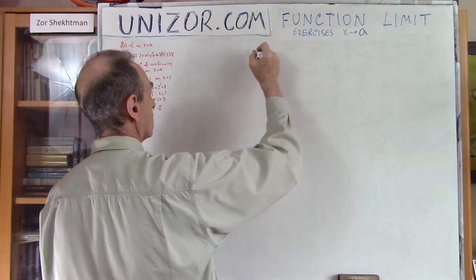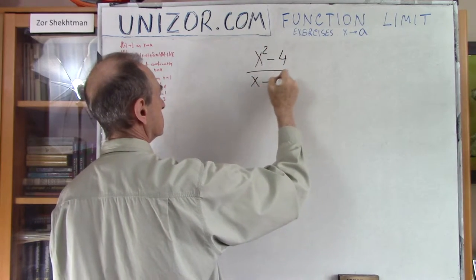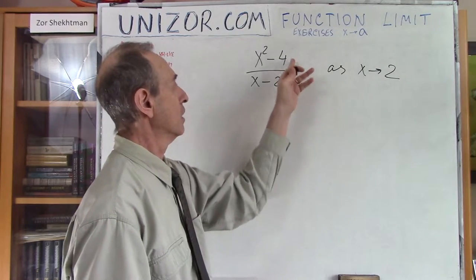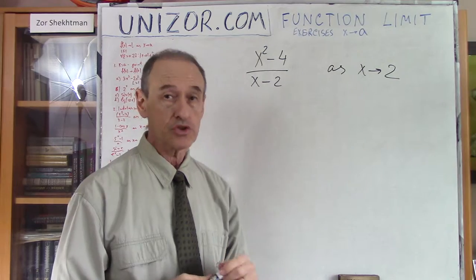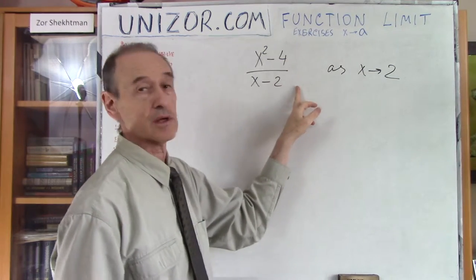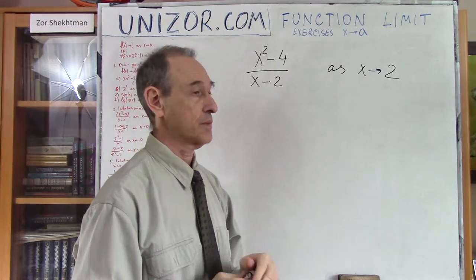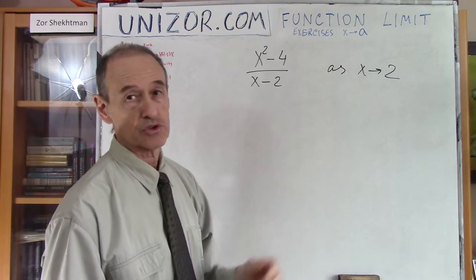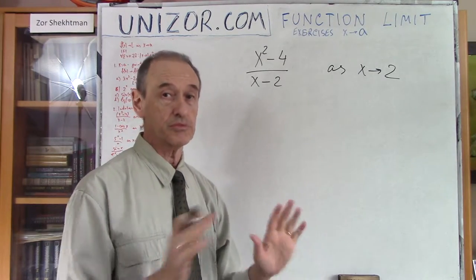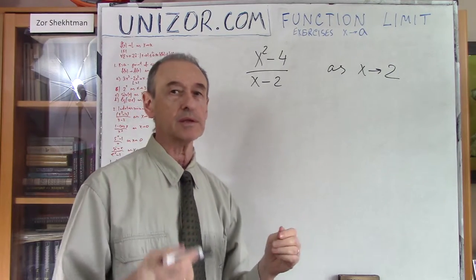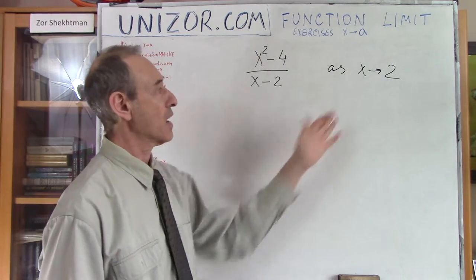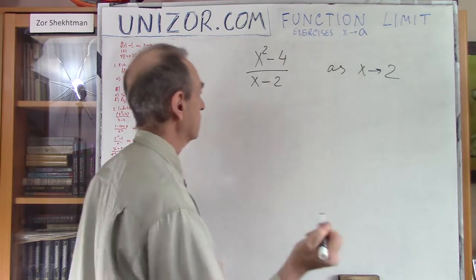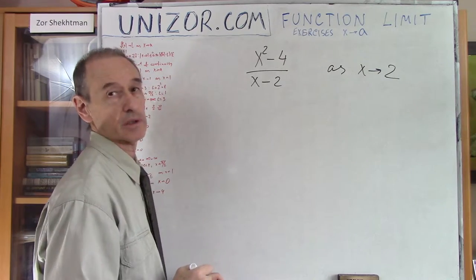My first case is the ratio of polynomials as x goes to 2. The problem is you cannot substitute 2 into this function because it will be 0 on the top and 0 on the bottom — it's indeterminate. So you have to think about how to simplify the function in such a way that the result is more understandable in terms of how to take the limit.